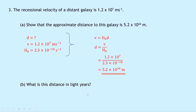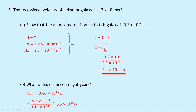Part B then says what is this distance in light years? Just like in question two, one light year is equal to 9.46 times 10 to the 15 meters — if you didn't know that, you can calculate it using speed-distance-time. To convert to light years we divide to get a smaller number: 5.2 times 10 to the 24 over 9.46 times 10 to the 15, which gives an answer of 5.5 times 10 to the 8 light years.